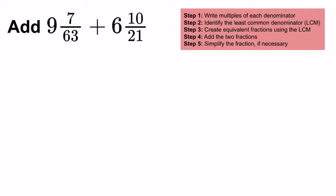Add 9 and 7 over 63 plus 6 and 10 over 21. Step 1: Write the multiples of each denominator.